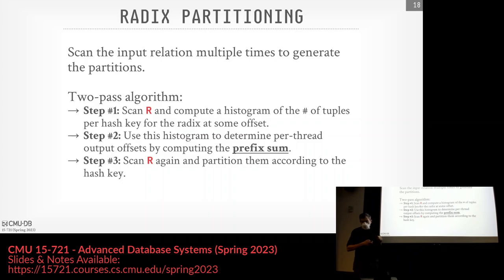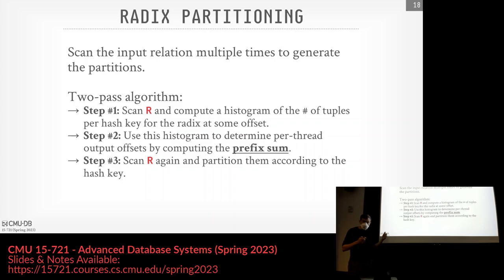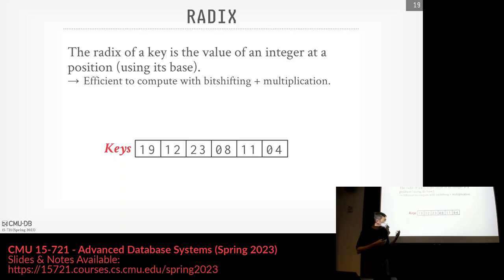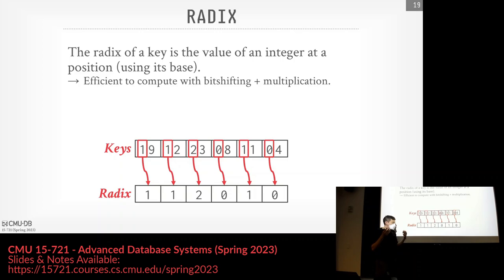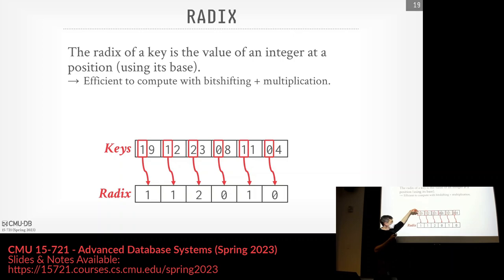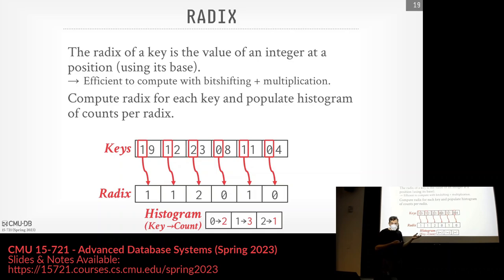A radix of a key is just the value within some position of the key itself, assuming integer keys. Think of keys 19, 12, 23, etc. The radix would be a digit at a given position — for the first position of those keys, the radix values would be 9, 2, 3, 8, 1, and 4. We compute the radix via bit shifting and masking, get the radix for the first position of the hash key, then compute a histogram saying for every radix value, how many elements exist in the input sequence.